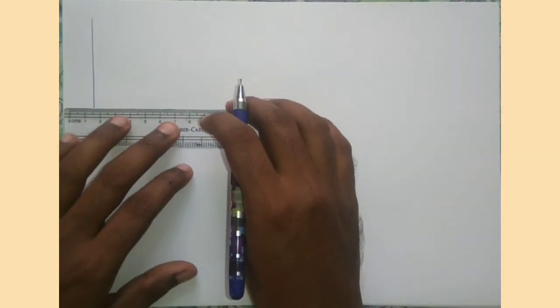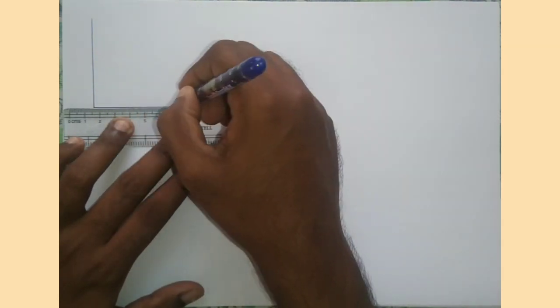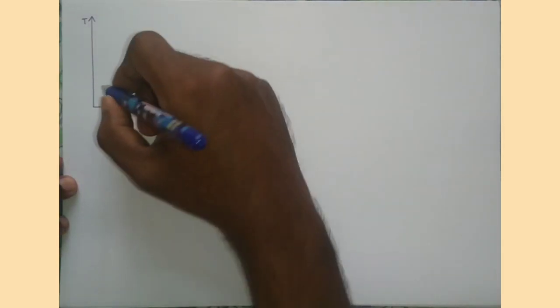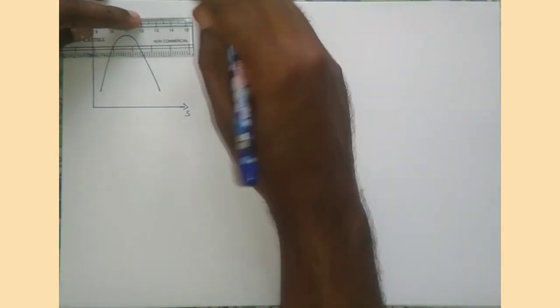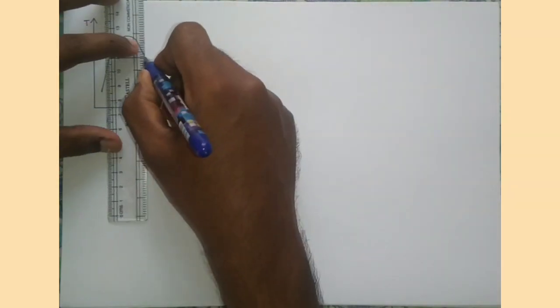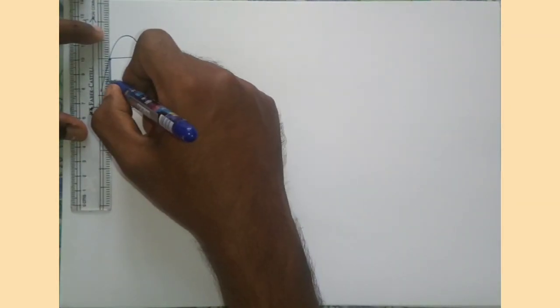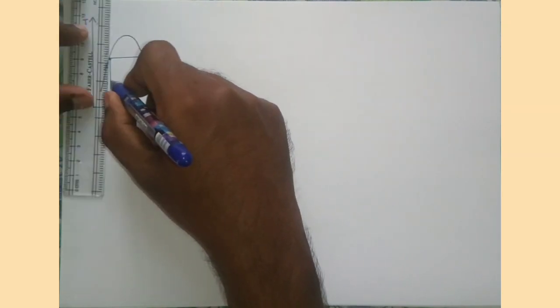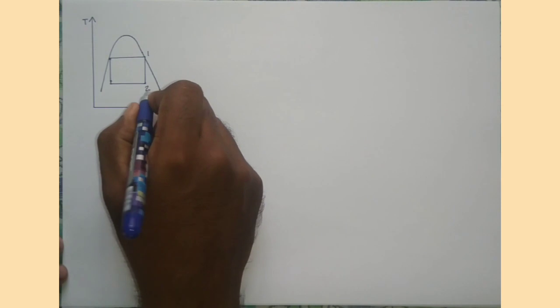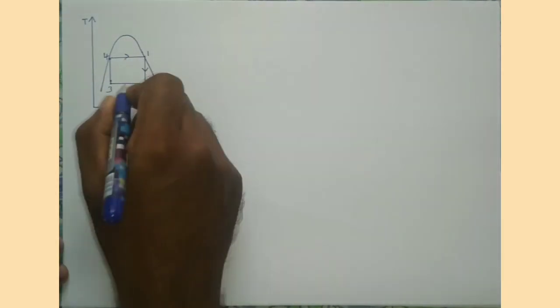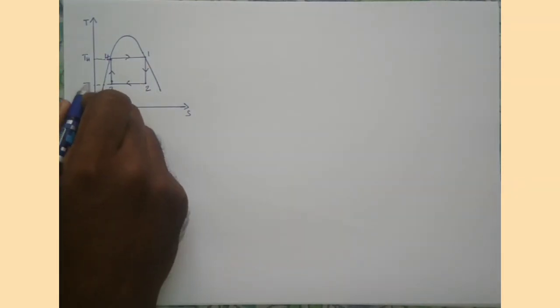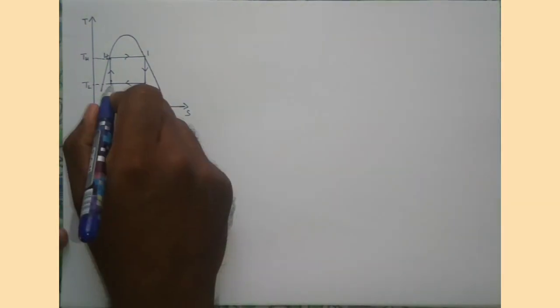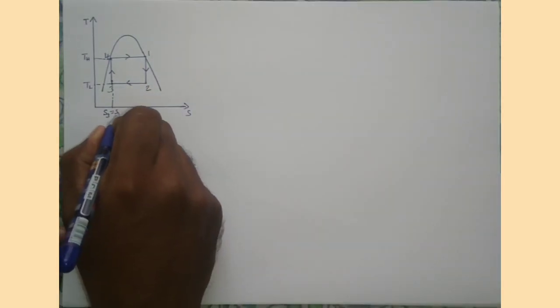First, I am going to draw the TS diagram of the Carnot cycle. I am marking the temperatures TH and TL, and also we know that the entropy S4 equals S3 and S1 equals S2.